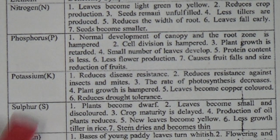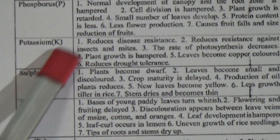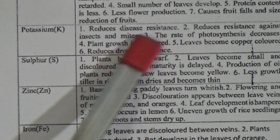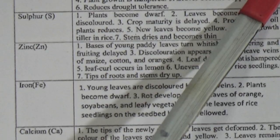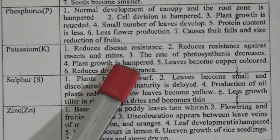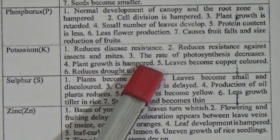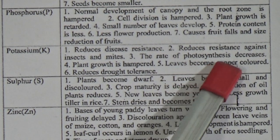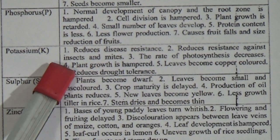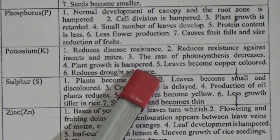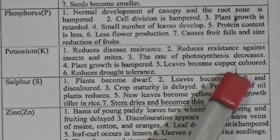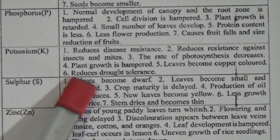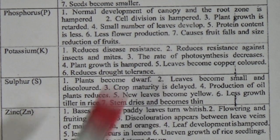Let's see the deficiency symptoms of Potassium. 1. Reduces disease resistance. 2. Reduces resistance against insects and mites. 3. The rate of photosynthesis decreases. 4. Plant growth is hampered. 5. Leaves become copper colored. 6. Reduces drought tolerance.